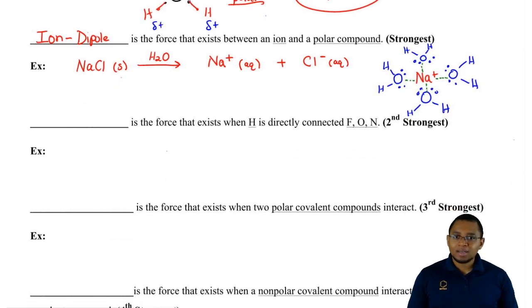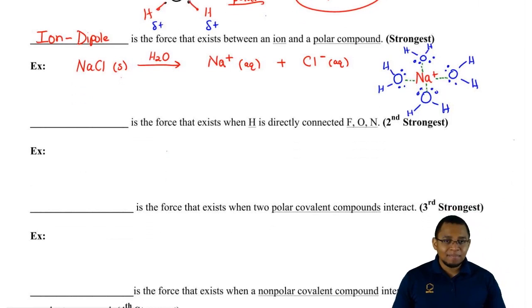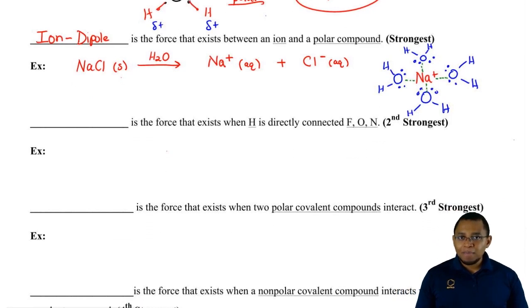So, here's an example of ion-dipole and we're going to say basically fundamentally we have ion-dipole anytime we have an ionic compound dissolving in a polar liquid like water. Water is polar based on the rules that we learned.